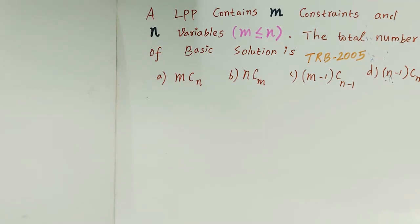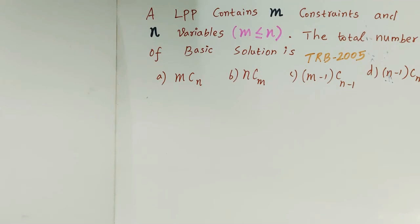The total number of basic solutions — if we call it nCm — is expressed using the combination formula nCr, where we apply n and m accordingly.